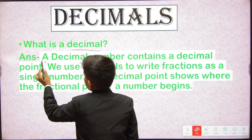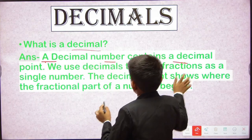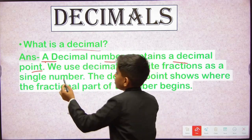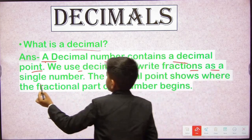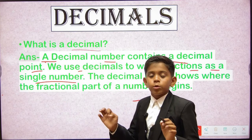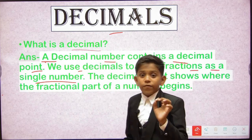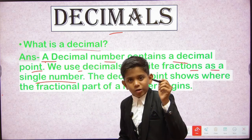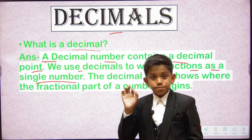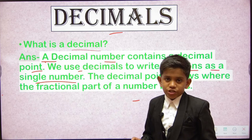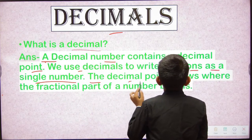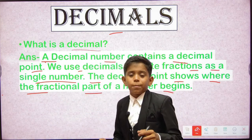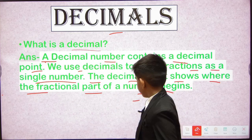First of all, what is a decimal? A decimal number contains a decimal point. We use decimals to write fractions as a single number using a decimal point. To learn what a fraction is and the types of fractions, you can visit the Little Dear Sir channel and watch our fractions video. The decimal point shows where the fractional part of a number begins.